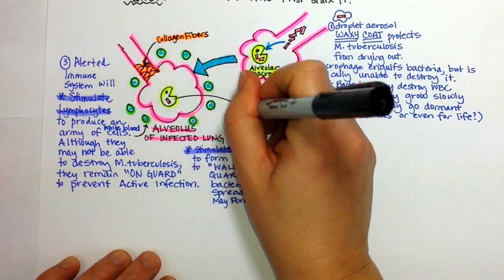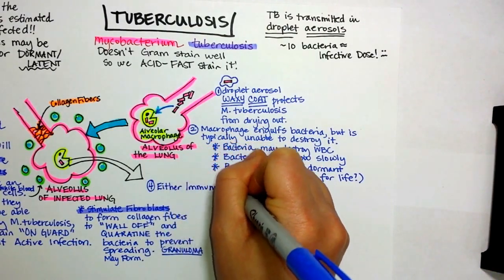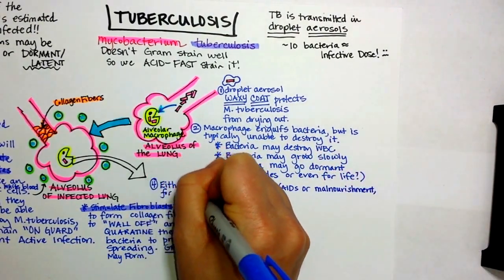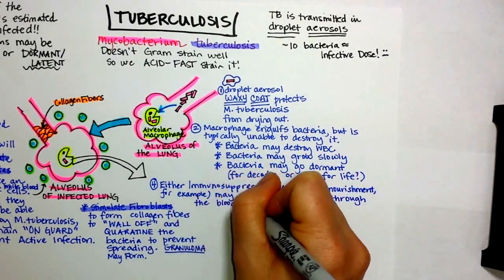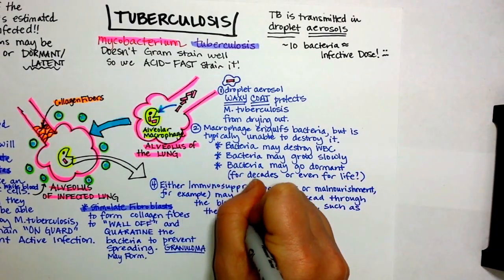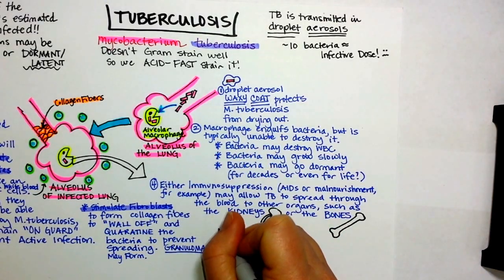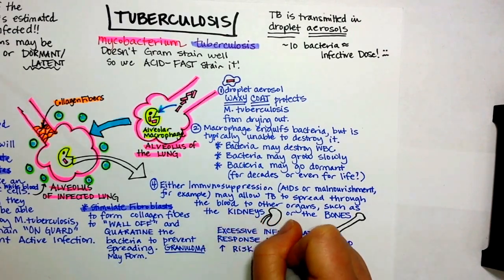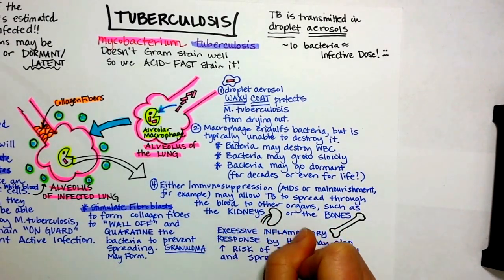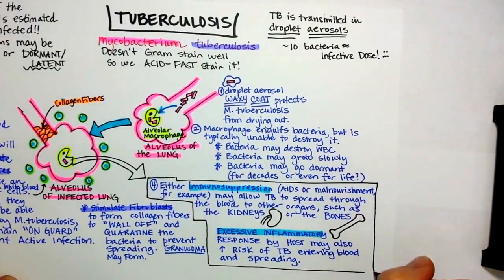The granulomas may even be visible on an x-ray. Sometimes, though, the mycobacterium can get into the blood. This typically happens if the person is really immunocompromised — for example, they have AIDS or they're malnourished. This immunosuppression means their lymphocytes aren't guarding the alveolus as well, and the mycobacterium can spread into the bloodstream. It is well known for traveling to the kidneys or the bones, although it can go to many other places.